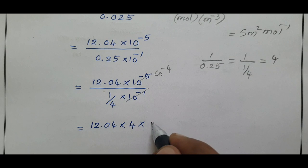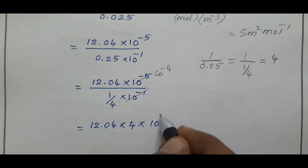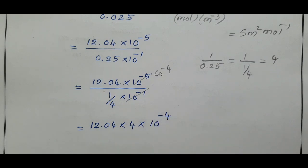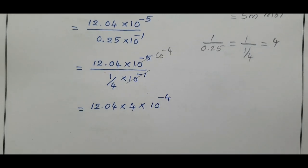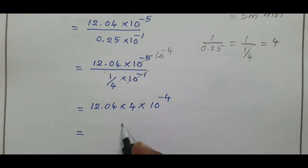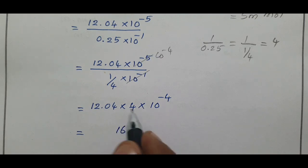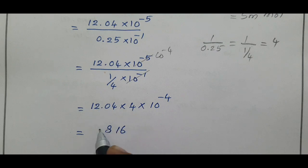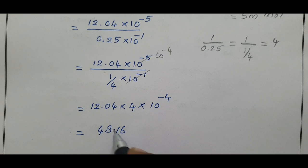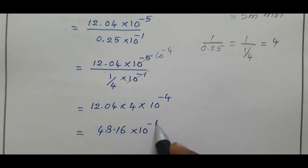Carrying out the multiplication: 4 × 4 = 16, 4 × 2 = 8, 4 × 1 = 4, giving 48.16 × 10⁻⁴.